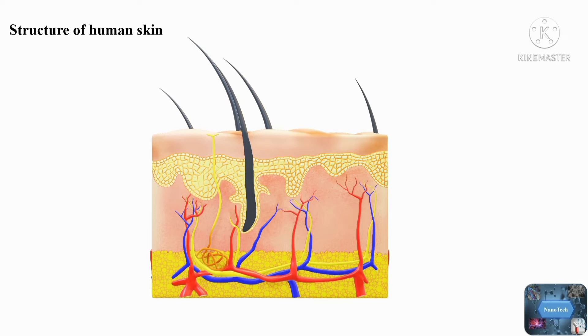The hypodermis is a subcutaneous tissue that lies beneath the dermis and is made up of fibroblast, macrophages, and adipocytes cells. It helps to connect the dermis to the bones and muscles.